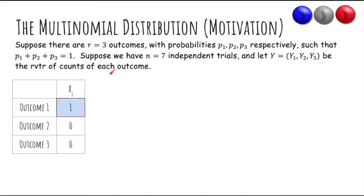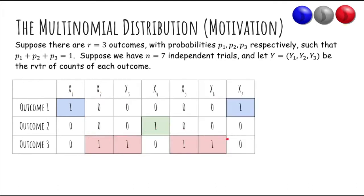For example, let's say that the first trial produces outcome one, the second one produces outcome three, outcome three, outcome two, and so on. So if you add up the counts of each outcome, you get that outcome one occurred two times, outcome two occurred one time, and outcome three occurred four times.